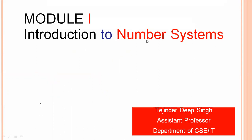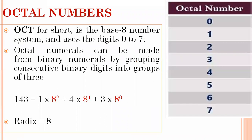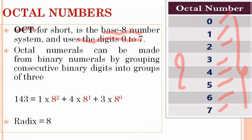The next number system is octal numbers, also called oct for short. Its base is 8 and it uses the digits 0 to 7 — that is, 0, 1, 2, 3, 4, 5, 6, and 7. Since there are 8 digits total, the base of the octal number system is 8.